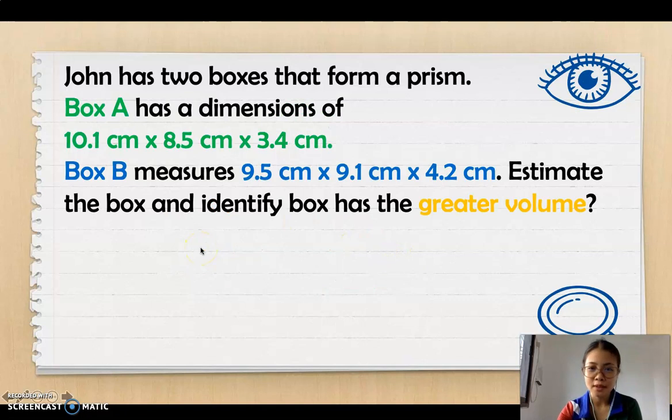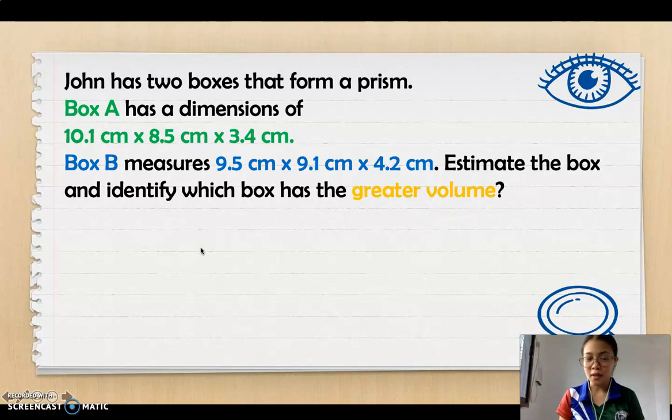Next. John has two boxes that form a prism. Box A has a dimensions of 10.1 centimeters by 8.5 centimeters by 3.4 centimeters. Box B measures 9.5 centimeters by 9.1 centimeters by 4.2 centimeters. Estimate the box and identify which box has the greater volume. In this problem, we need to find for the estimated volume of box A and box B and then we will compare which is the greater volume.